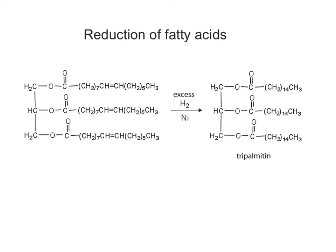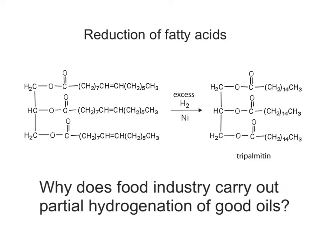This process is the basis for the conversion of plant oils into margarine and other products. For some time, margarine has been considered a more healthy dietary fat than butter, but recent evidence shows that in the process of partial hydrogenation, some of the double bonds become single bonds, some of the double bonds remain as cis-double bonds. However, some of the double bonds get isomerized, transforming into trans-double bonds.